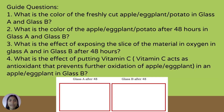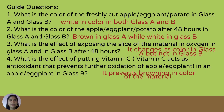What is the color of the freshly cut apple, eggplant, or potato in Glass A and B? What is the color after 48 hours in Glass A and Glass B? What is the effect of exposing the material to oxygen in Glass A versus Glass B? And what is the effect of vitamin C, which acts as an antioxidant that prevents further oxidation? Answers: Number 1 — white in color in both Glass A and B. Number 2 — brown in Glass A, white in Glass B. Number 3 — it changes color in Glass A but not in Glass B. Number 4 — vitamin C prevents browning of the material.